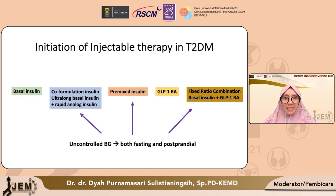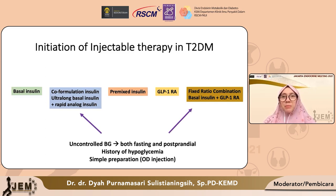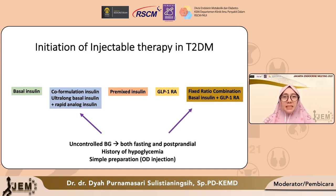Kalau kita melihat dari pola gula darah pasien, pasien mengalami gula darah baik puasa maupun postprandial yang dua-duanya sama-sama tinggi. Sehingga pilihan kita mengerucut dari lima jenis injeksi menjadi tiga jenis: apakah kita menggunakan insulin co-formulation, fixed ratio combination, atau premix insulin. Kemudian kita juga perlu memikirkan tentang risiko hipoglikemi, di mana pasien pernah mengalami hipoglikemi dan mengaku sangat tidak nyaman, dan pasien menginginkan preparat yang simpel, cukup satu kali injeksi. Sehingga pilihan kita menyempit menjadi dua, antara insulin co-formulation atau fixed ratio combination.